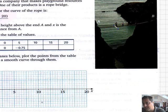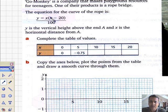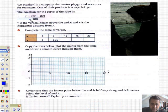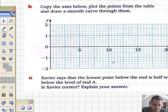One of their products is a rope bridge. The equation for the curve of the rope is Y equals X bracket X minus 20, all divided by 100. This is out of order, this bit. You divide this part by 100, not the Y. I'm now going to take the liberty of rubbing it out. That's the equation. You don't divide Y by 100.